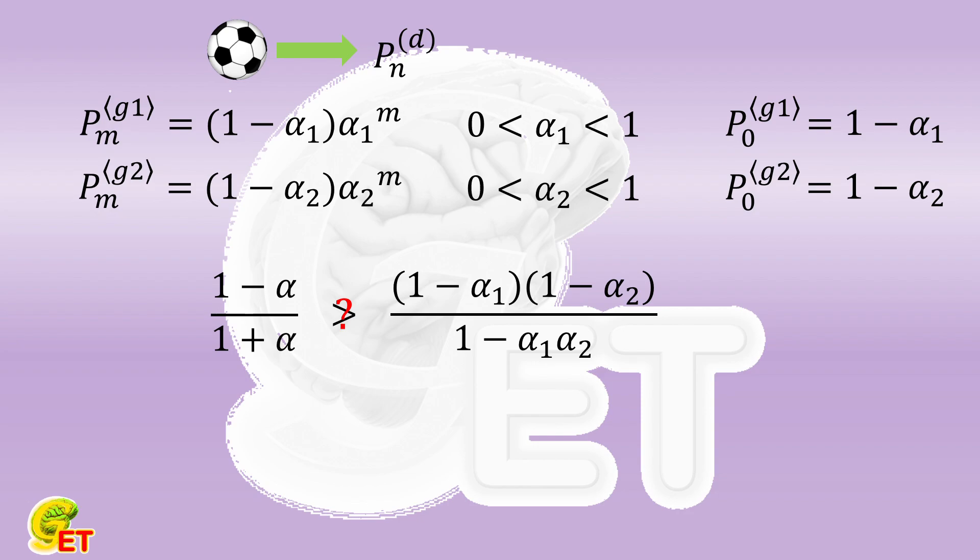For example, if α equals 9/10, the previous probability is equal to 1/19. And if α₁ and α₂ are equal to 1/10 and 2/10 respectively, the new probability is equal to 72/98, which is much larger than 1/19.